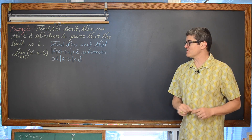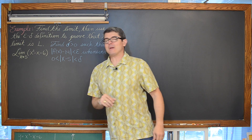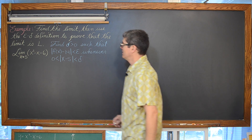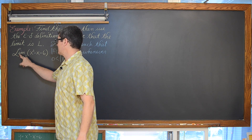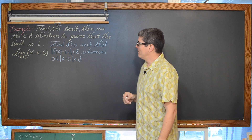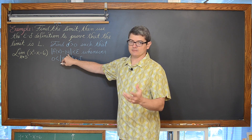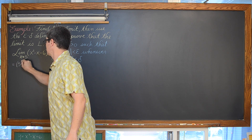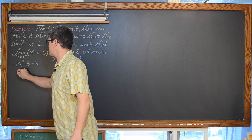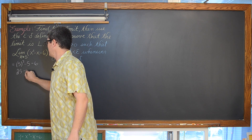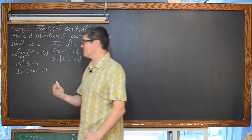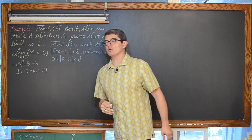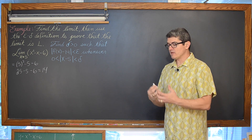We are going to find the limit as x approaches 5 of x squared minus x minus 6. The limit as x approaches 5 of x squared minus x minus 6 is going to be equal to 5 squared minus 5 minus 6. That is 25 minus 5 minus 6, which is going to be equal to 14. So we are going to try and prove that the limit of this expression is 14 when x approaches 5.